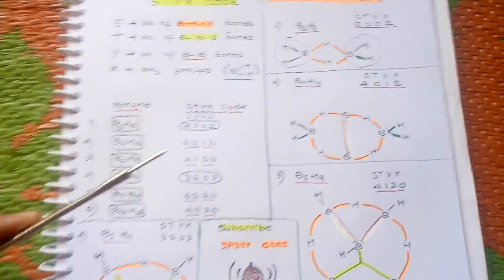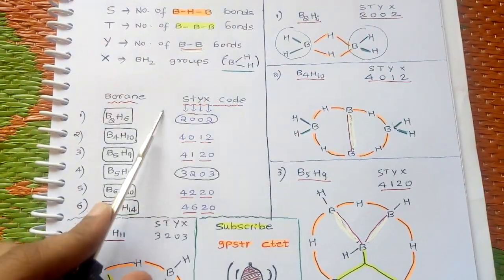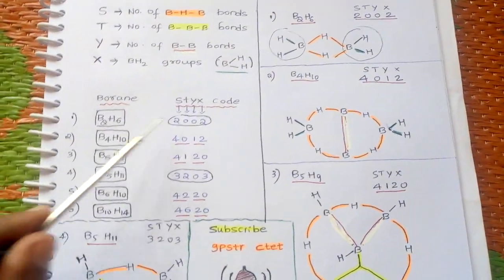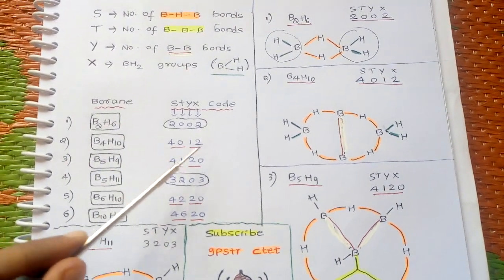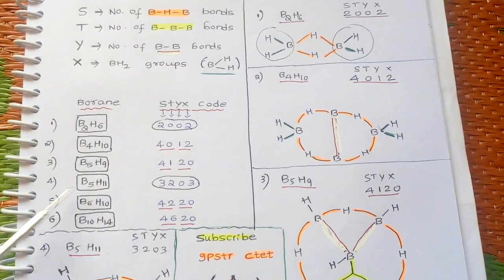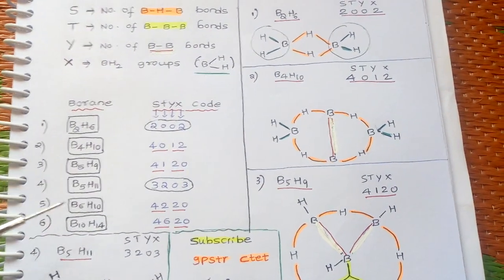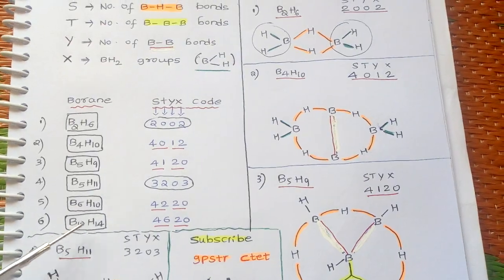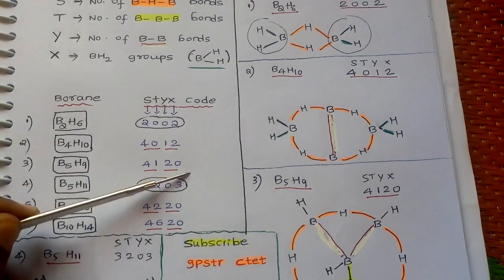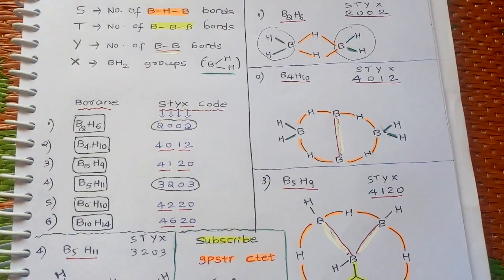For B2H6 the STYX code is 2002 — this one is a bit random, just remember it. For B4H10 it is 4012, for B5H9 it is 4120, for B5H11 remember 3203, for B6H10 it is 4220, and for B10H14 it is 4620. Try to remember these like a phone number pattern.